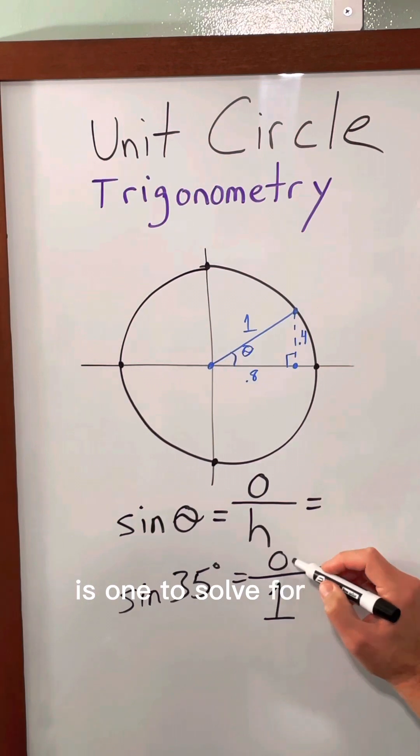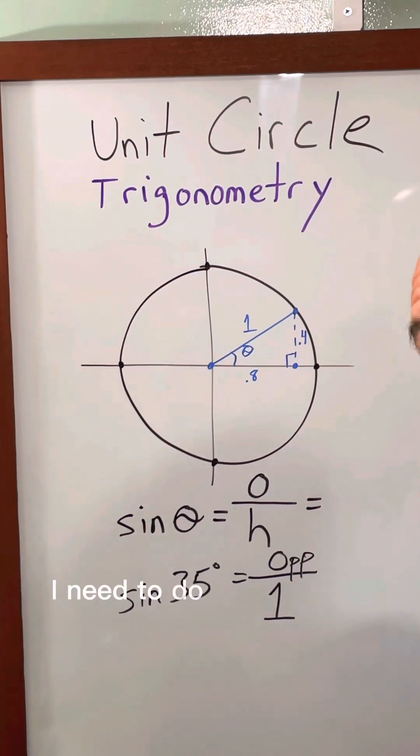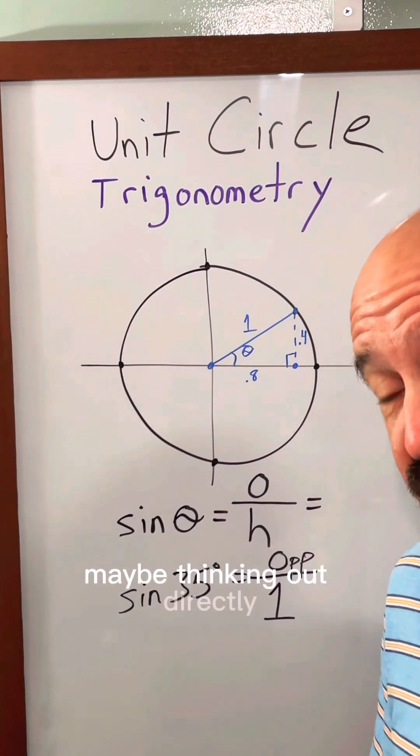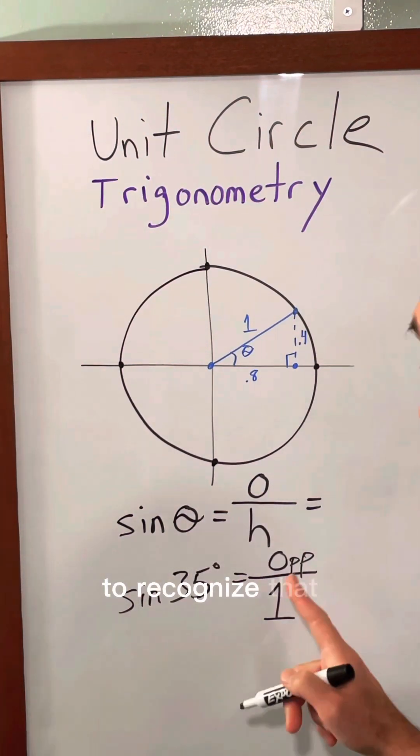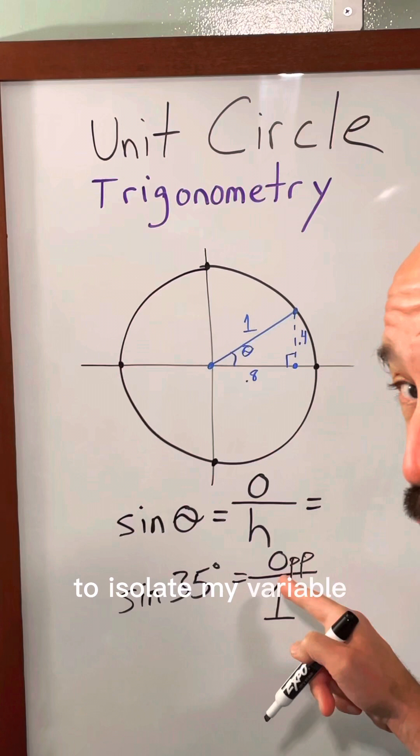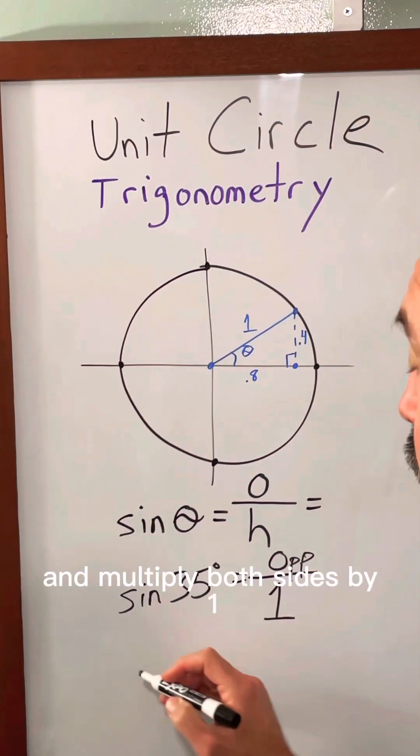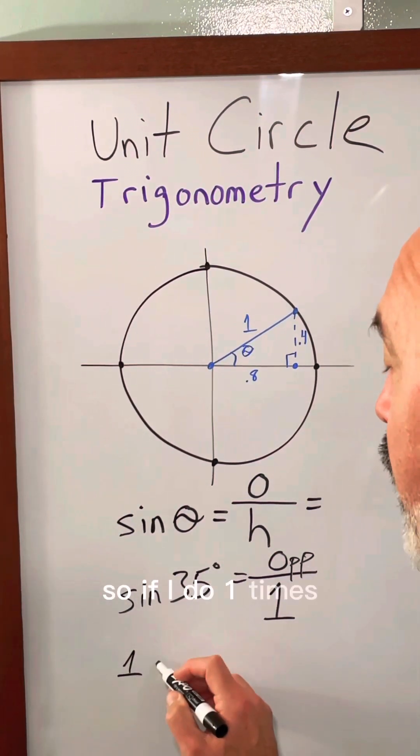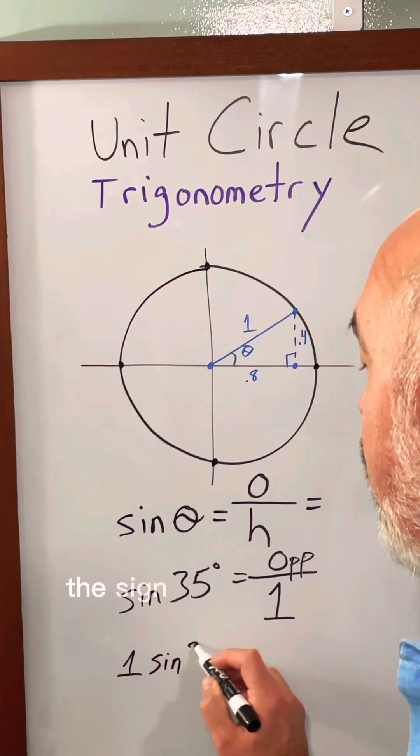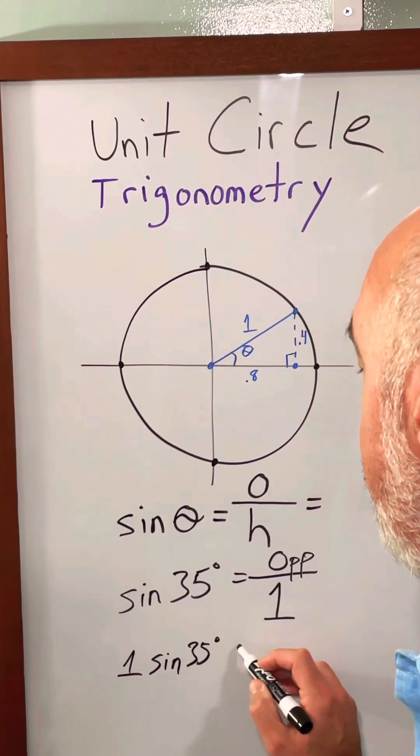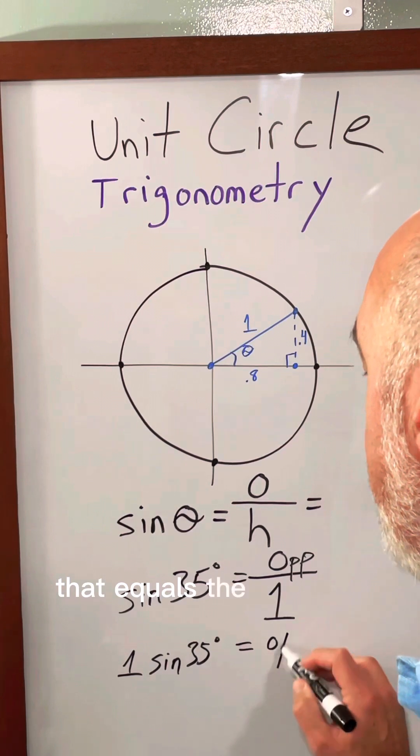To solve for O, I'm going to write it as OPP. Thinking algebraically to recognize that to isolate my variable, I multiply both sides by 1. So if I do 1 times the sine of 35 degrees, that equals the opposite.